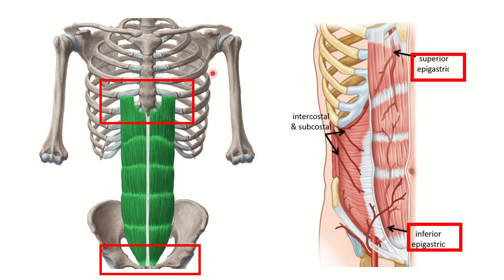This rectus abdominis muscle starts from above — here we can see it arises from the lower part of the sternum, that means the xiphoid process, and some of the ribs either side of the xiphoid process. We can see it descends downwards up to the pubic tubercle. So this is the normal origin and insertion of the rectus abdominis muscle. Then in the second picture we can see the blood vessels going through the rectus abdominis muscle — here first we can see the superior epigastric artery.